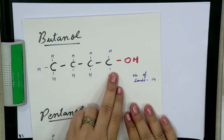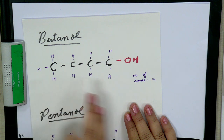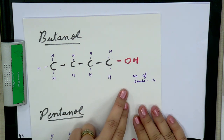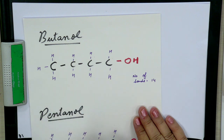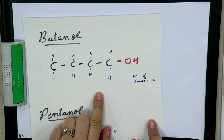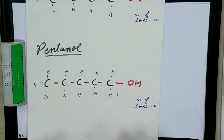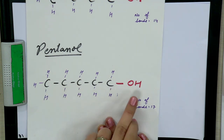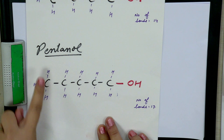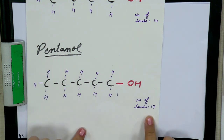For butanol, 'but' means there are four carbons and mandatory presence of the OH group. You must have completed the valency of carbon with hydrogens. The total number of bonds is 14, with one bond between O and H. For pentanol, it is five carbons with mandatory OH group, and total number of bonds was 17. That was all about session 4.